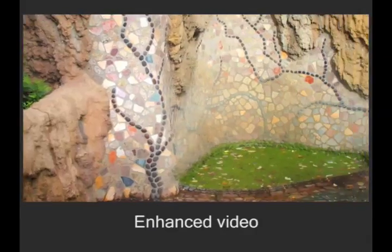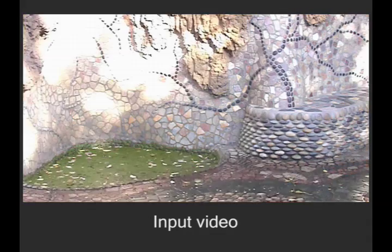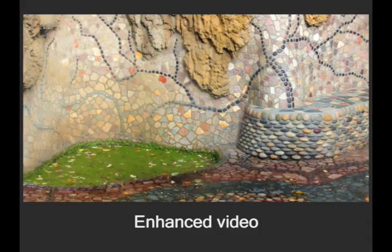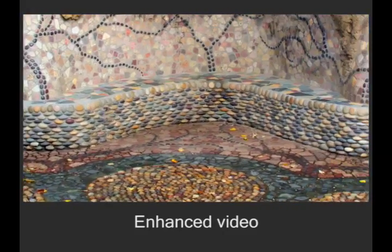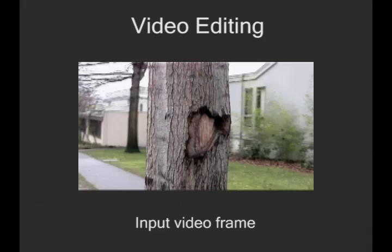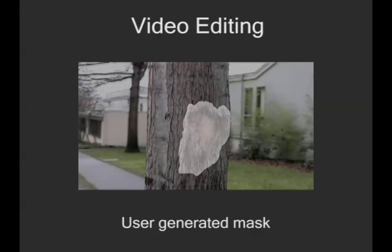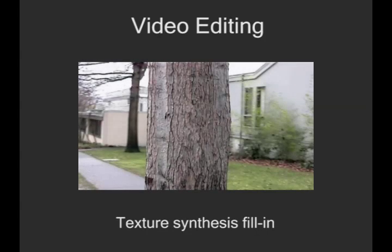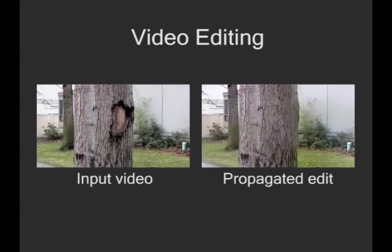For example, here we transfer photographic qualities such as proper exposure to the video. Our system can also modify an entire video by editing just a few photographs or video frames. In this example, we've removed the scar on the tree by editing a single video frame. The edit is then automatically propagated through the video.